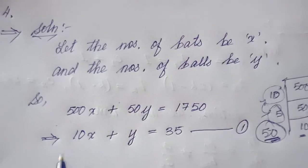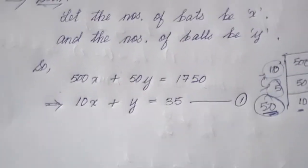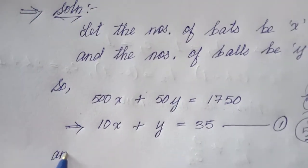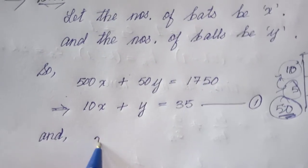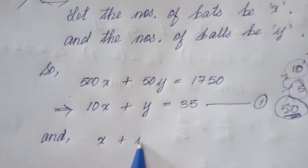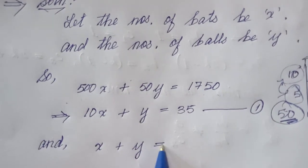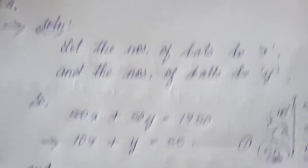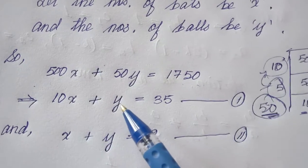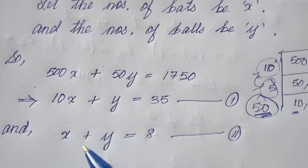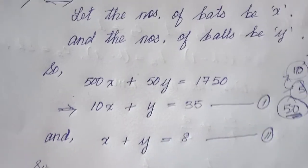For the second equation, he bought x bats and y balls and the total number bought is eight. So equation two is: x + y = 8. Looking at equation one and equation two, both have y with no coefficient, meaning both are positive — so I have to use subtraction.